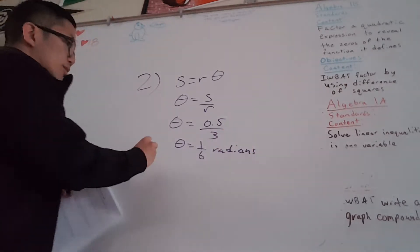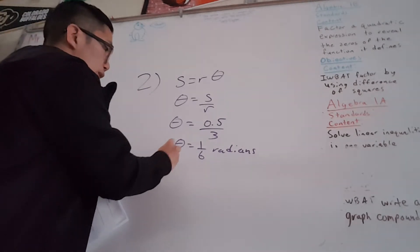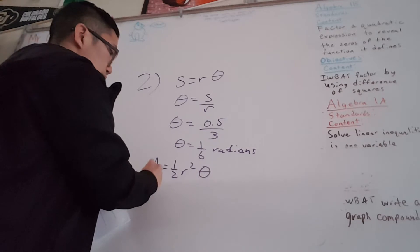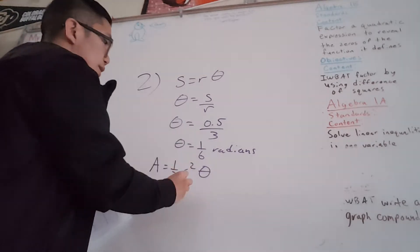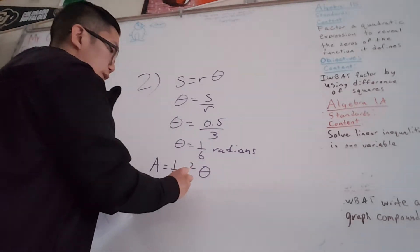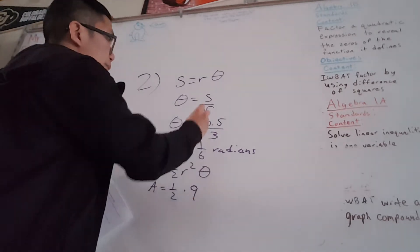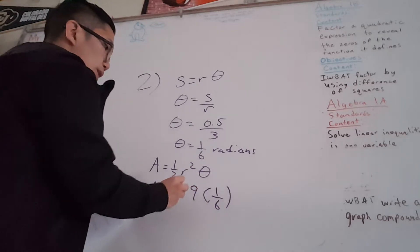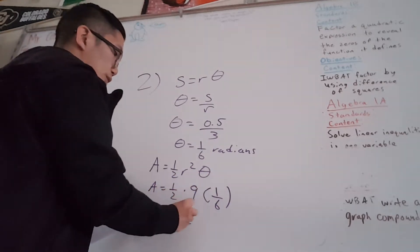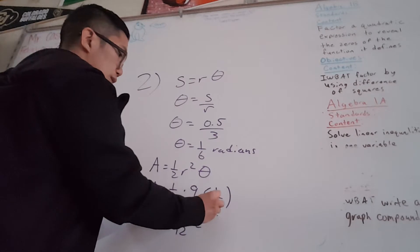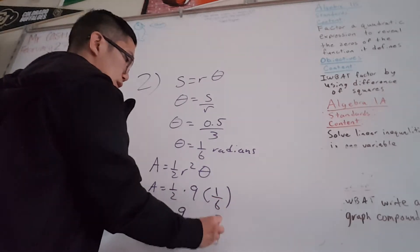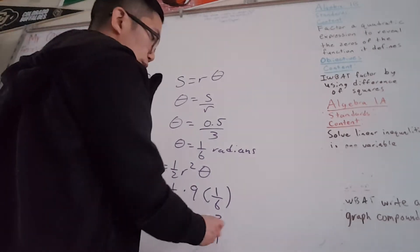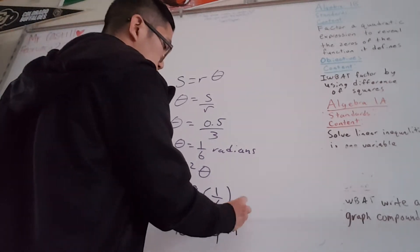Now to find the area of the sector, there's a formula: 1/2 r squared theta. So r in this case is 3. So 3 squared is 9 and my theta is 1.6. This becomes area equal to 9 times 1.6 over 2, which is 3 fourths. So my area here is 0.75 or 3 fourths meters squared.